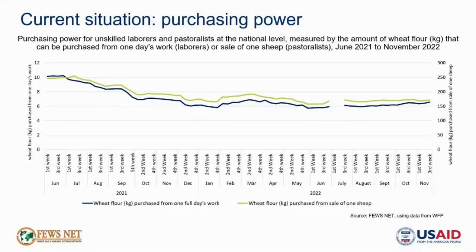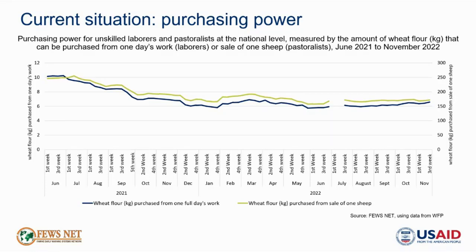These high food prices have been significantly reducing household purchasing power. The graph illustrates this using proxy indicators for laborers and pastoralists, two key livelihood strategies for poor households in Afghanistan. The blue line shows the amount of staple wheat flour an unskilled laborer could purchase from one full day's work at prevailing wage rates, and the green line shows the amount a pastoralist could purchase from the sale of one sheep. After declining fairly steadily since the beginning of 2021, purchasing power for unskilled laborers has improved slightly in the second half of 2022, driven by both declining wheat flour prices and increasing wages.